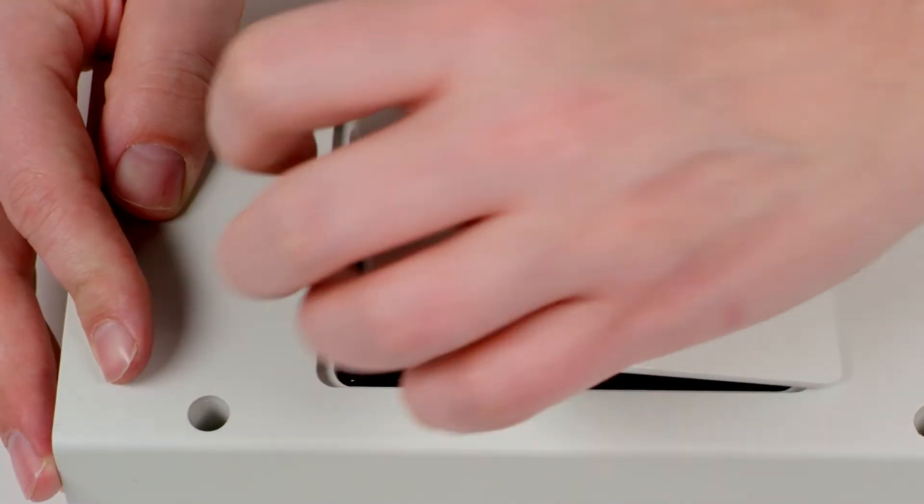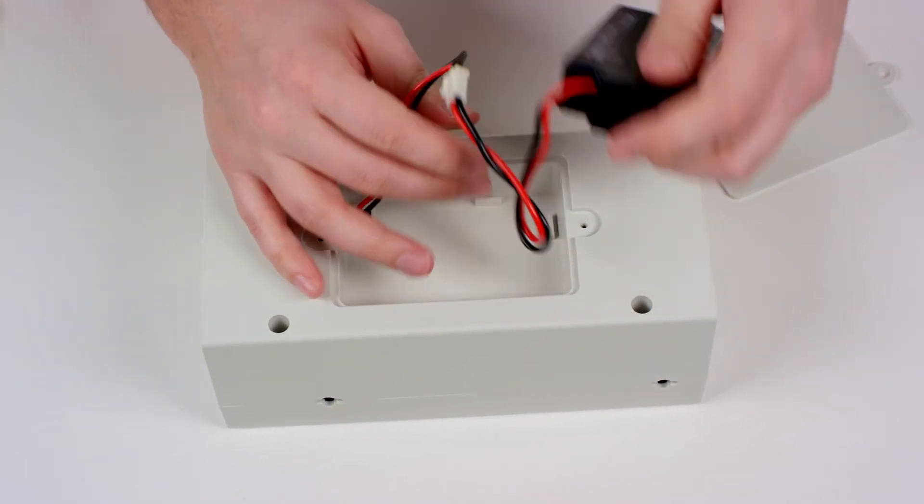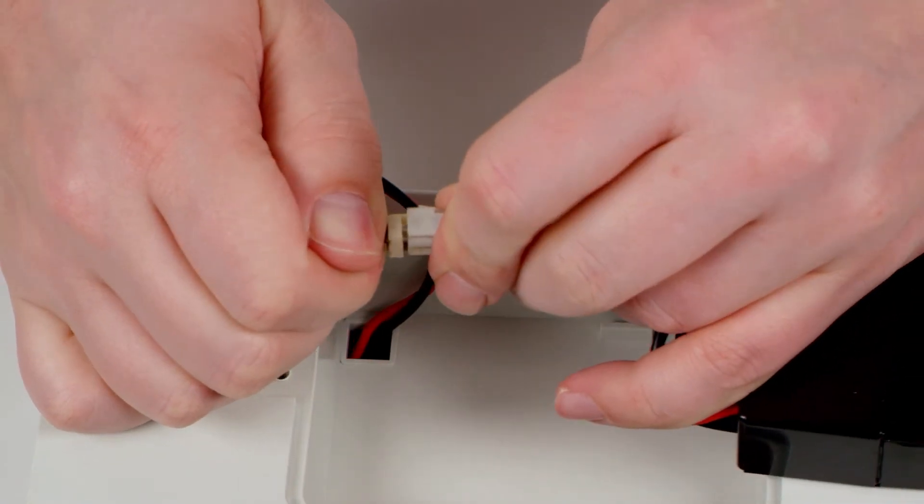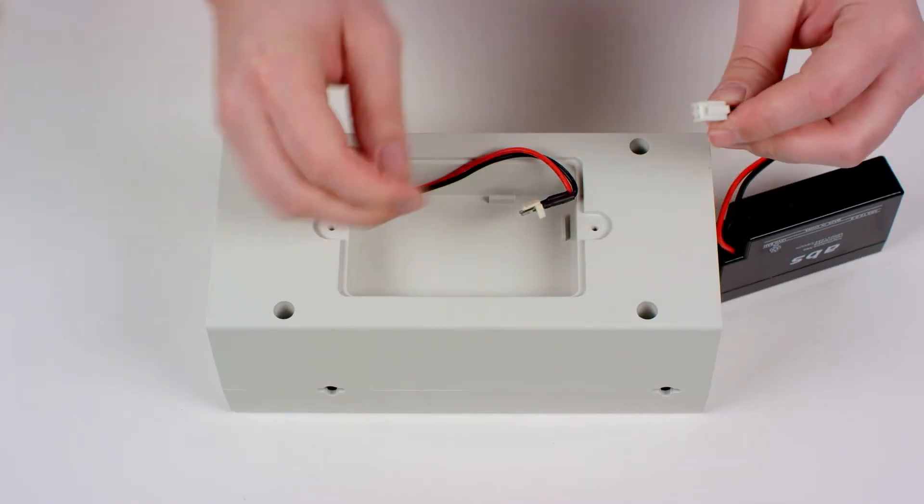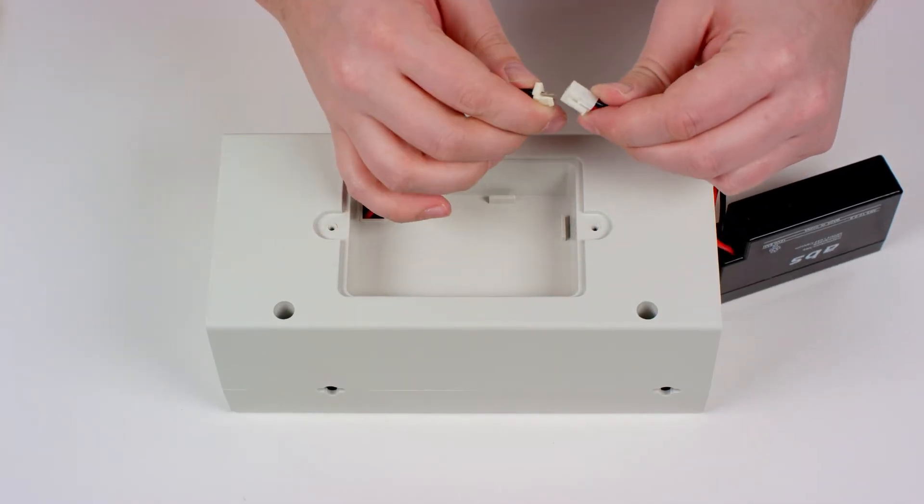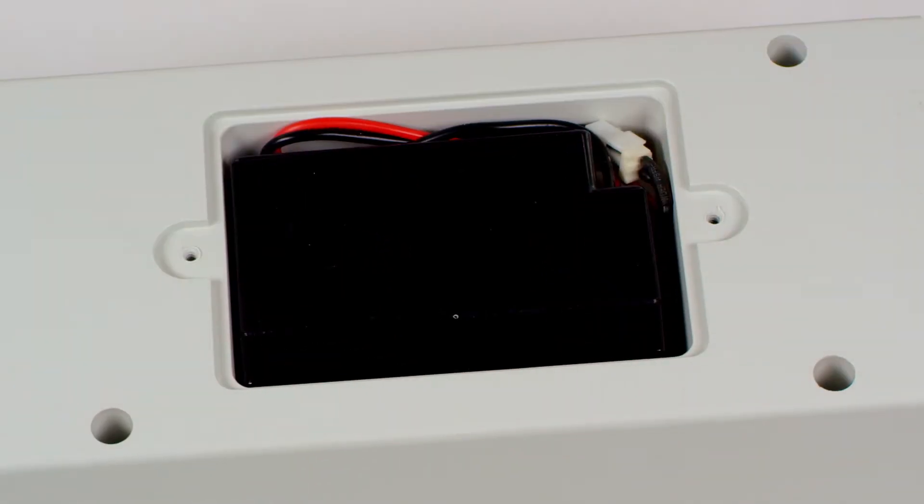Next, remove the used lead-acid battery by detaching the white clip. Connect the new lead-acid battery using the same white clip. Insert the battery into the panel, putting the excess wires to the side of the battery.